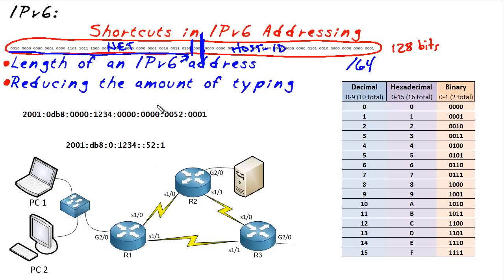The good news is we do not have to input IPv6 addresses in binary — that would be silly and take a long time. Instead, we're going to use something called hexadecimal, where we simply convert four bits at a time into hex. That's a discussion for another day.